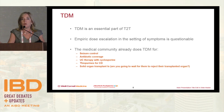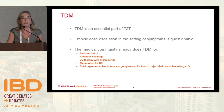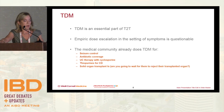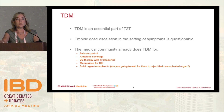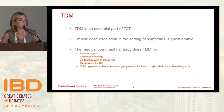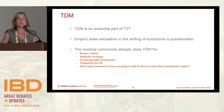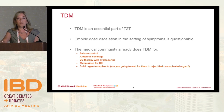In ulcerative colitis, a long time ago we started using cyclosporine before we had monoclonal antibodies, and we knew there was a target range such that patients might not go on to colectomy so quickly. In Crohn's disease, we learned that there are certain levels of 6-MP we should be targeting to give a better chance of clinical remission. Even in solid organ transplants, they keep patients within a therapeutic window to prevent rejection.